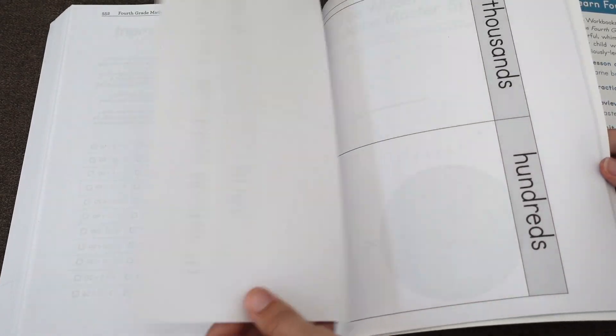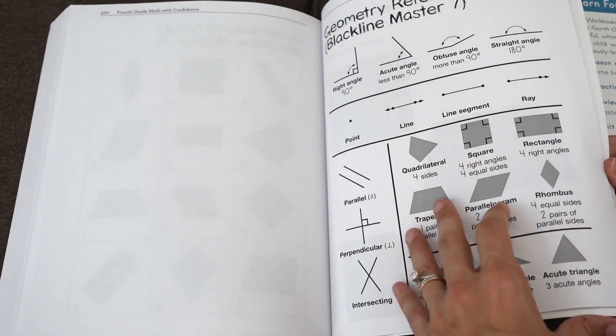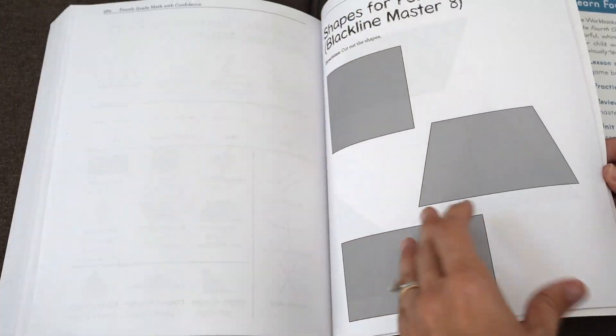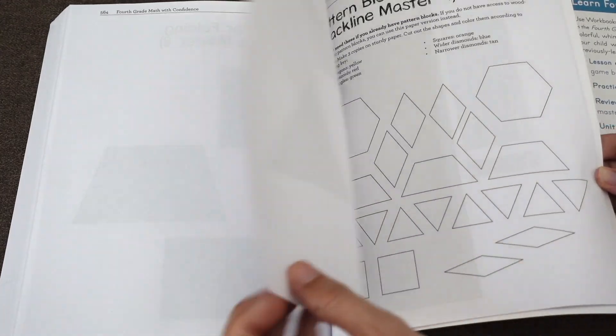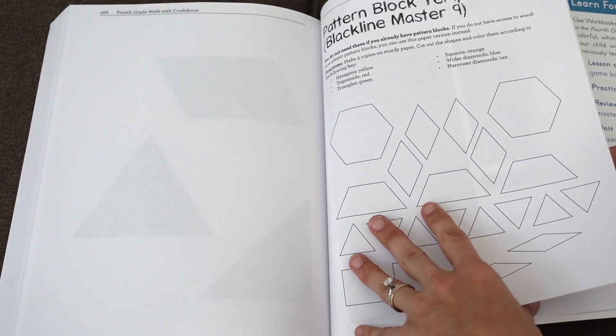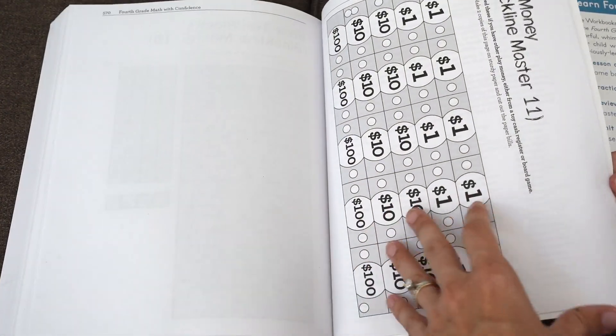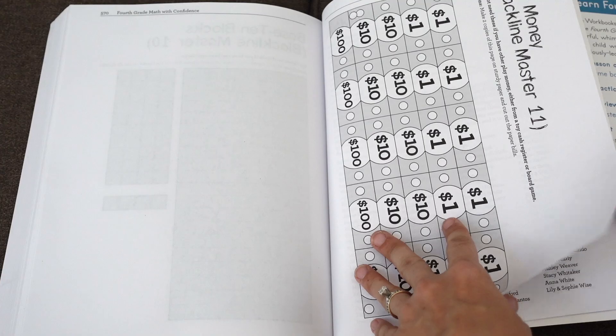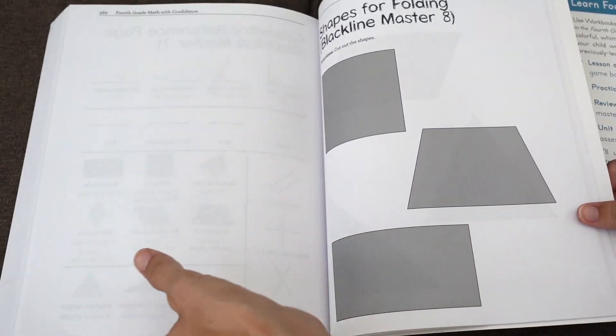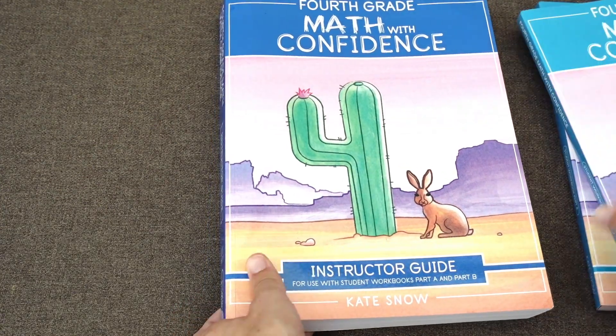Then there are just some different charts that might be useful for you. We haven't always used all the black line masters, but we have used some of them. And so you can cut them out if needed. If you don't have pattern blocks, you can use paper ones, although it's nicer if you can use real physical pattern blocks. They even have play money if you don't have play money. So that's what your black line masters are like. And that is fourth grade Math with Confidence.